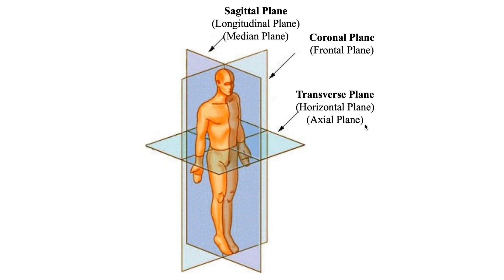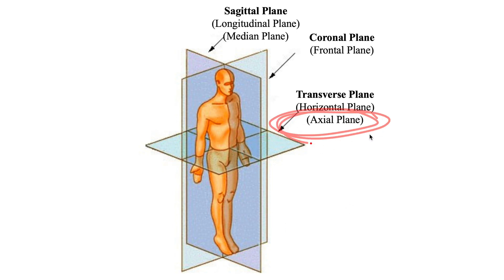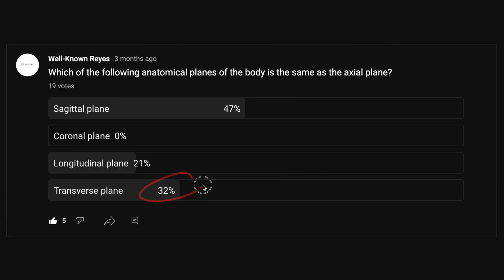The transverse plane is also known as the horizontal plane and the axial plane. Remember that transverse means across, so it is going to divide the body into superior and inferior halves. This is also known as the axial plane. So the correct answer here is the transverse plane.